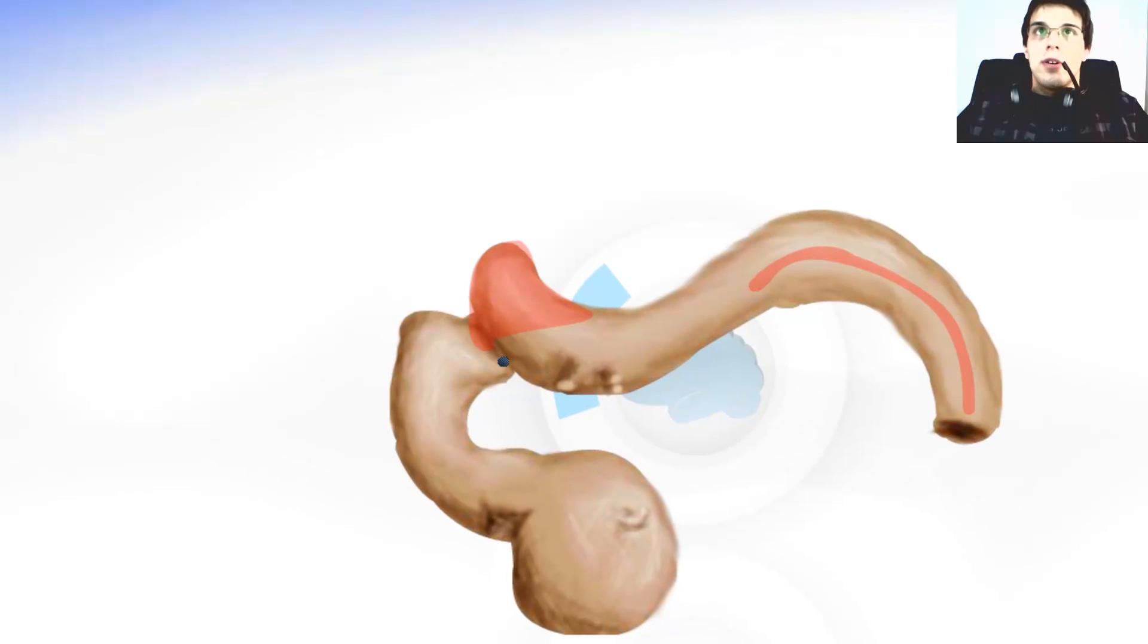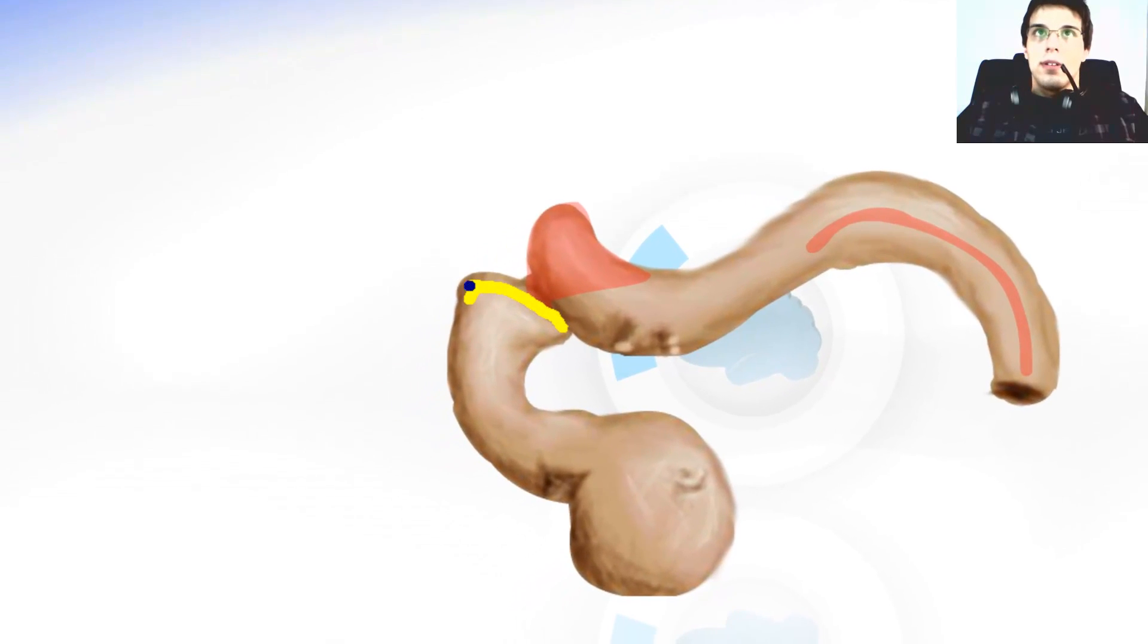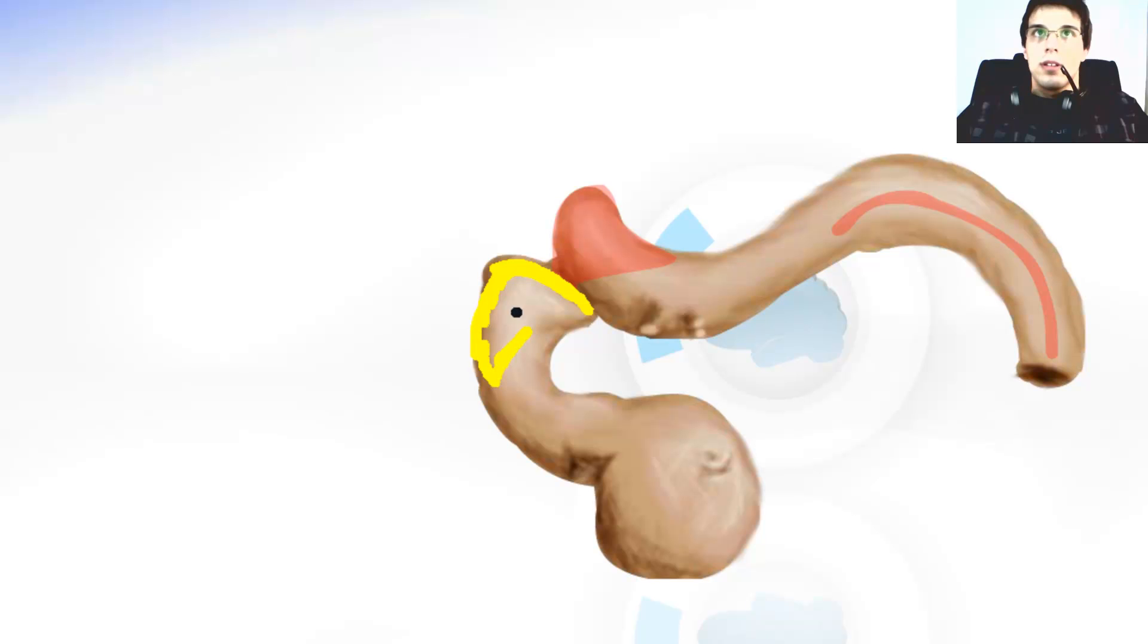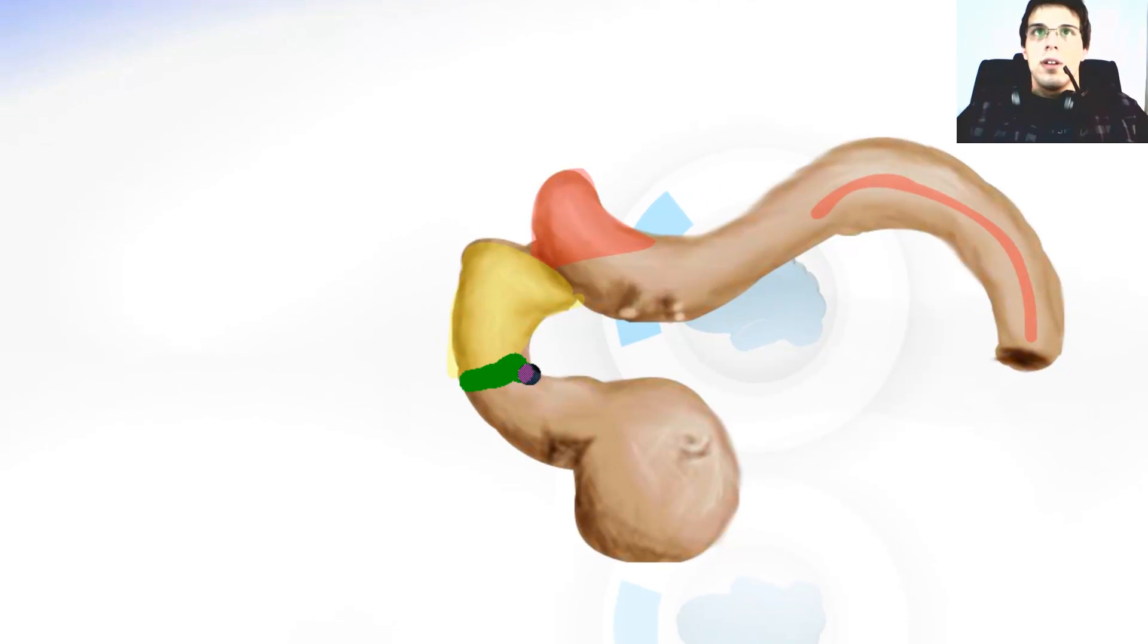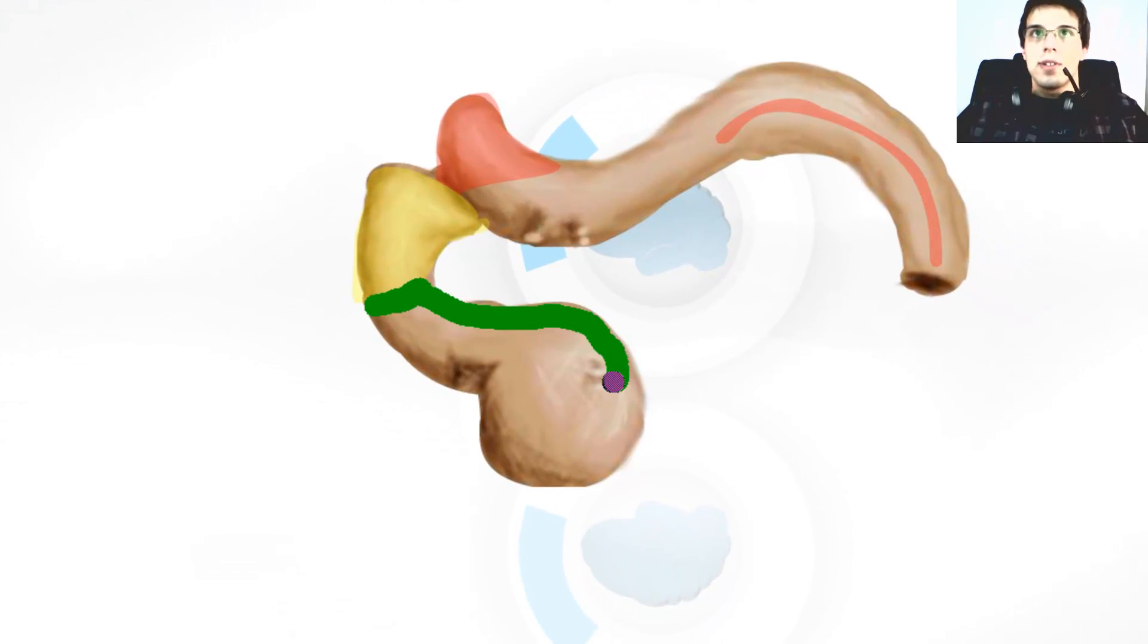Then comes the part called the mesencephalon. There are also other things I will point out later after I describe you each part of the future brain. This part over here is the future diencephalon, and the last part is the telencephalon.